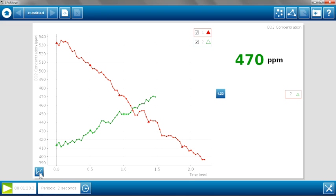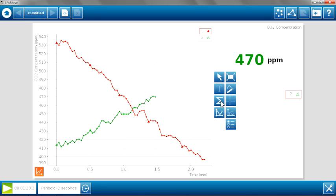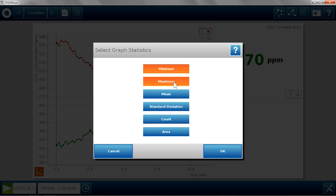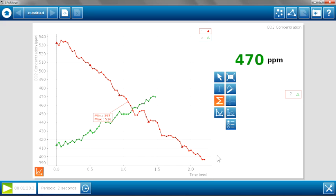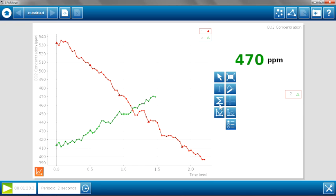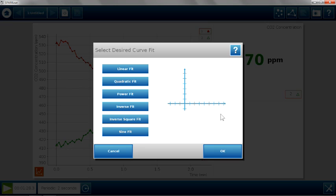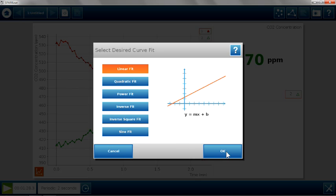I'm going to open up my graph tools by selecting the graph icon and there are a few things that you can do here. You can use a statistics tool to get the minimum and the maximum. So if you want students to look at what the carbon dioxide was at the very beginning of data collection and at the very end of data collection and find the change in concentration that occurred during that time period, the minimum and the maximum is a good tool to use. You can also use the graph tools to find the rate of the change. Using this tool, we can do a linear fit. And you'll see the linear fit gives us the rate of carbon dioxide decrease. In this case, negative 66.8 parts per million per minute.